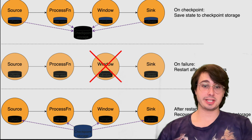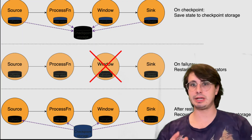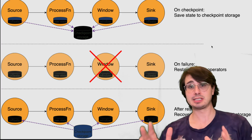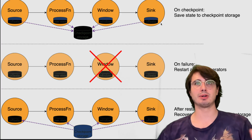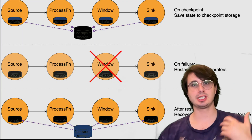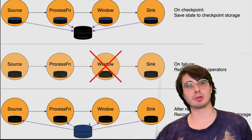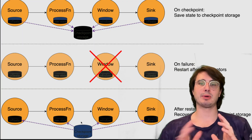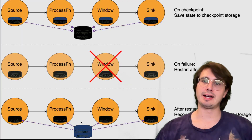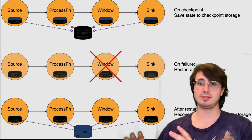The next thing to think about is checkpointing and fault tolerance. Checkpointing is Flink's primary mechanism for fault tolerance — it creates consistent snapshots of distributed state. On failure, you have a saved state written to checkpoint storage; the job gets restarted and data is recovered from checkpoint storage, so you're not ever processing something twice, only reprocessing what actually broke.